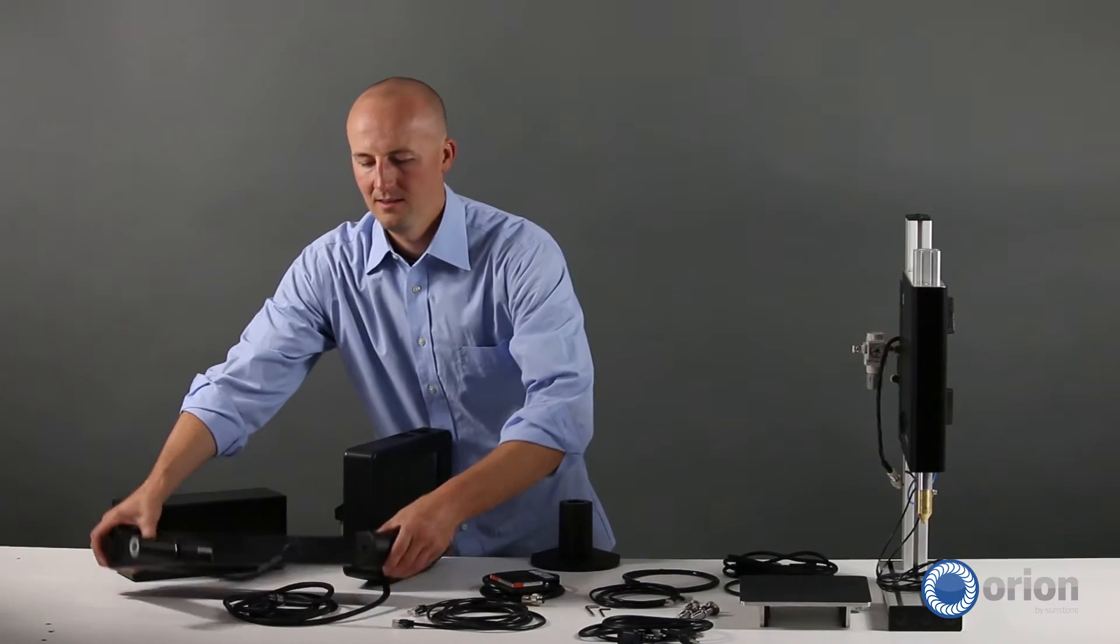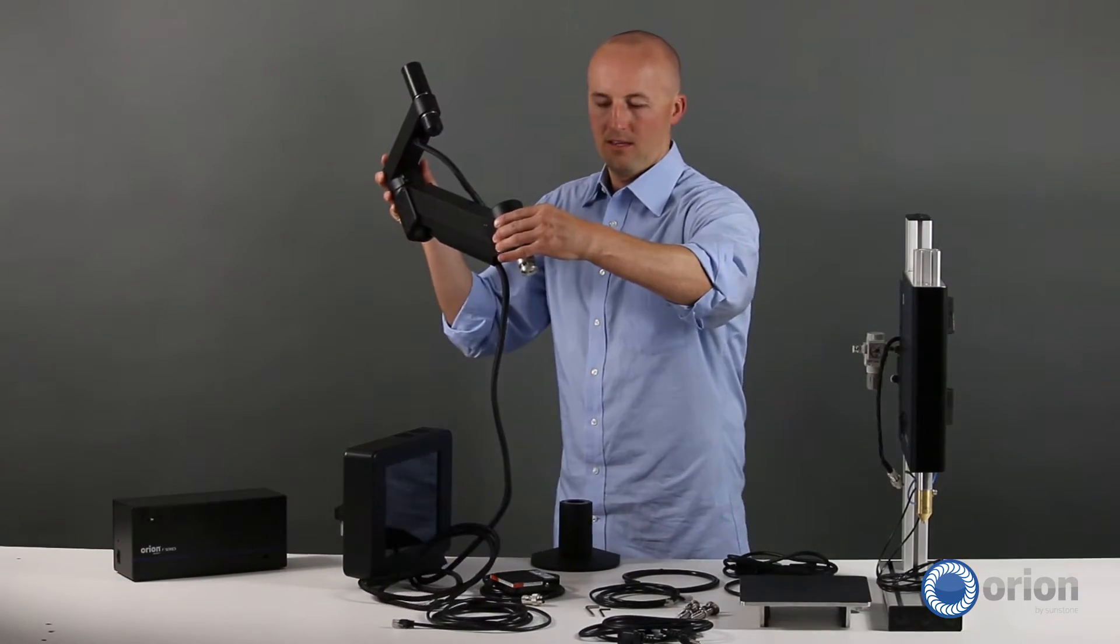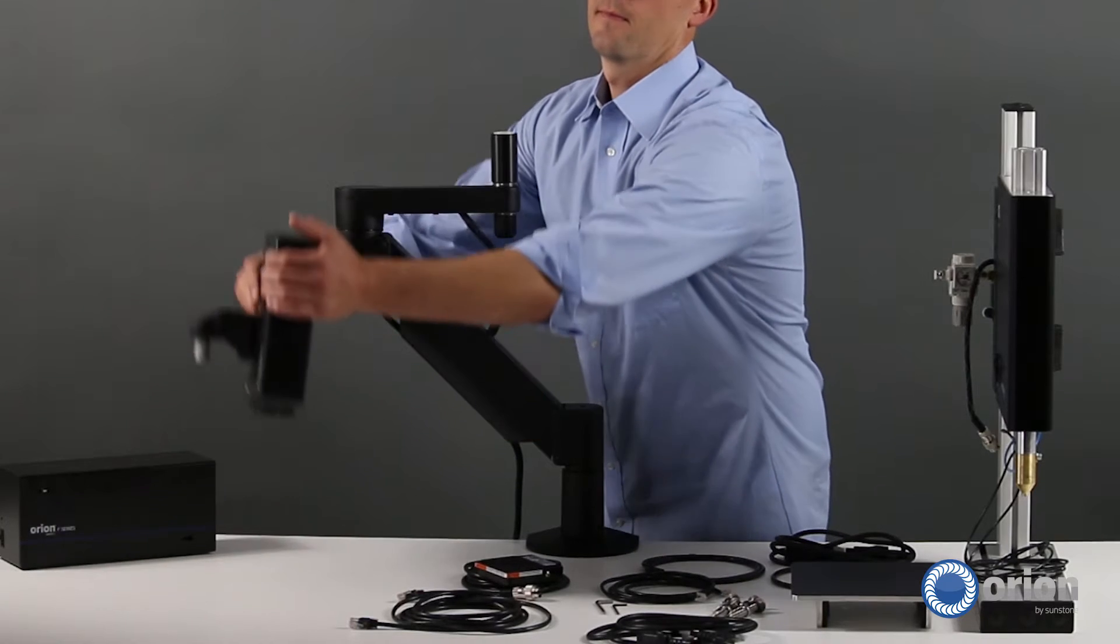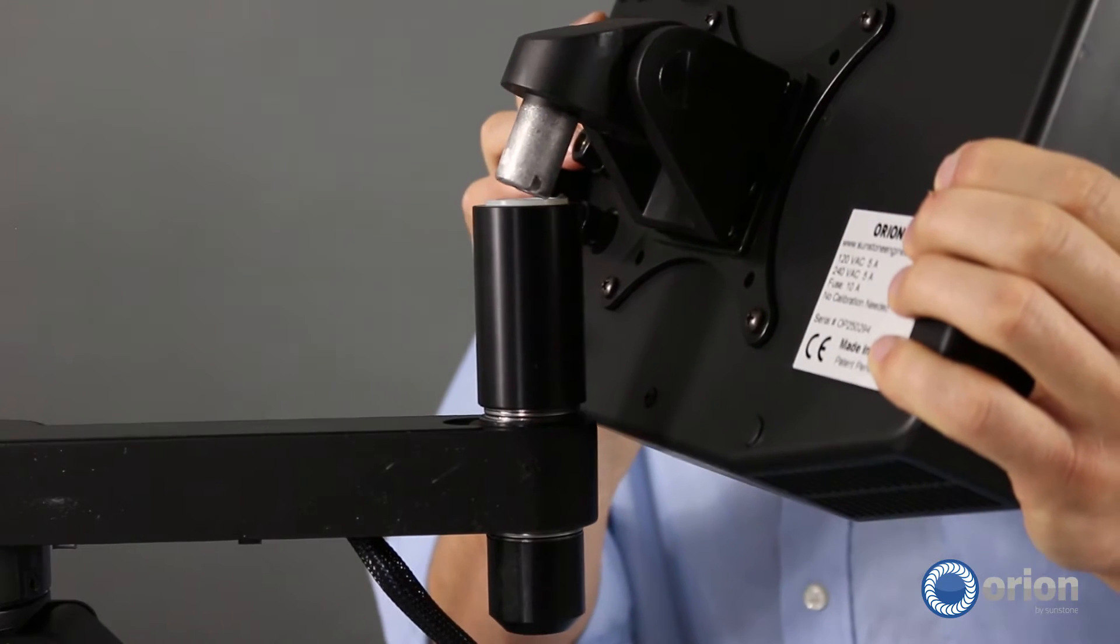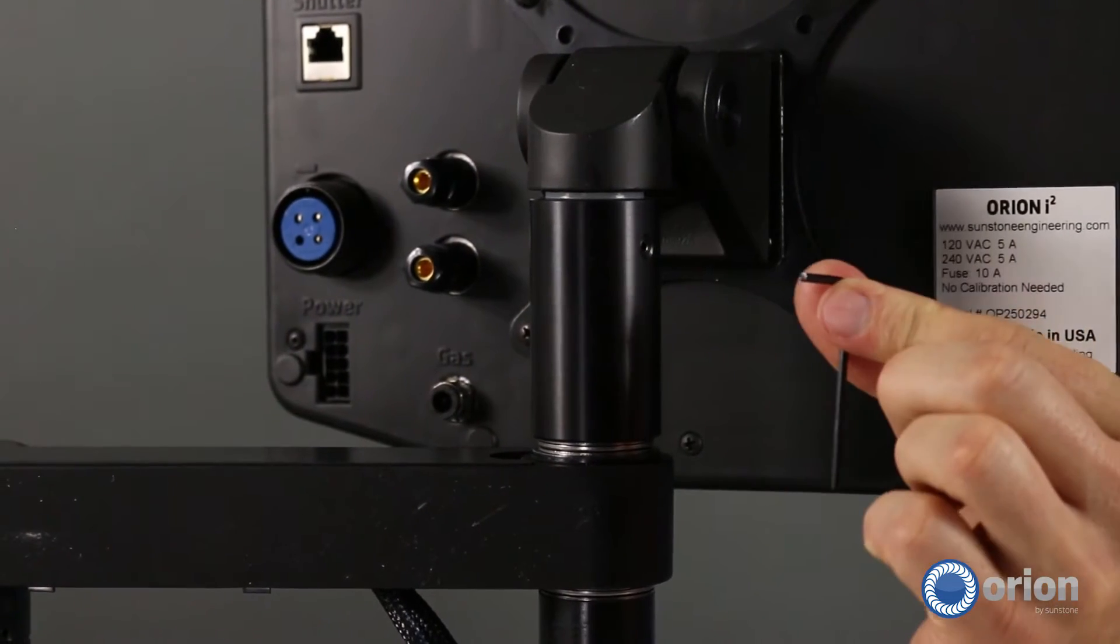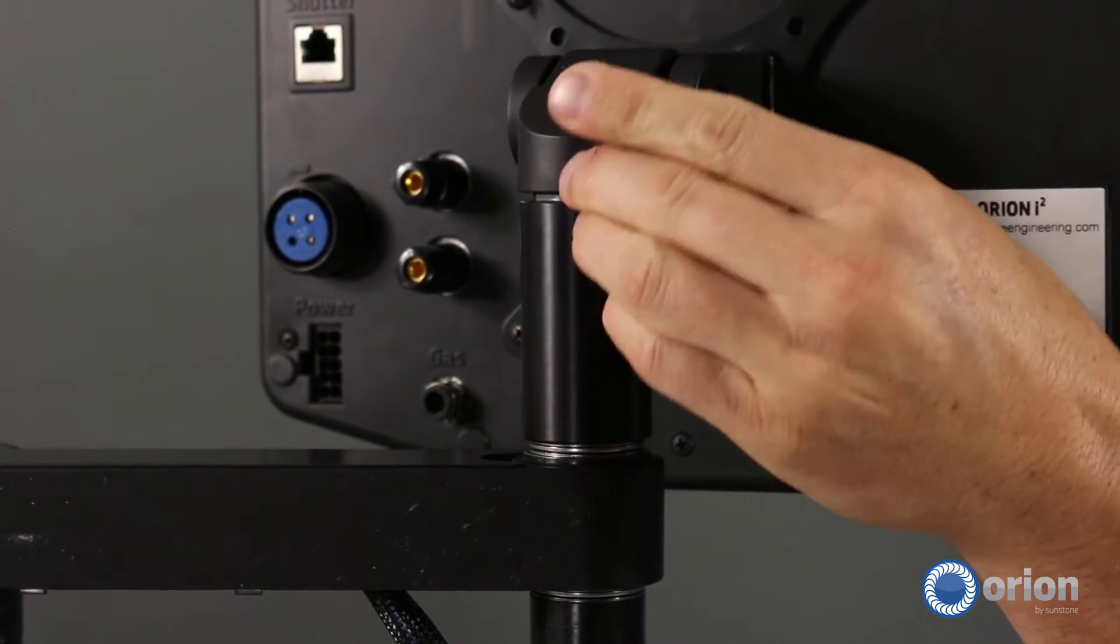Insert the bottom end of the microscope arm into the microscope arm table mount. Insert the welder into the top of the arm, then use an Allen wrench to secure the welder in place on the arm.